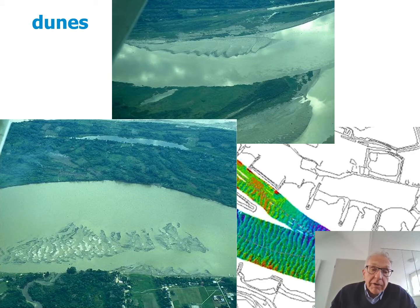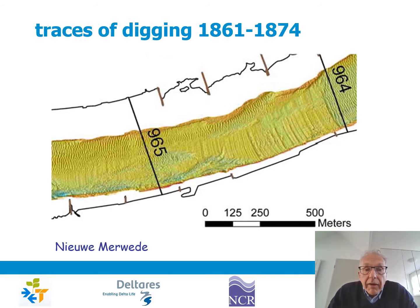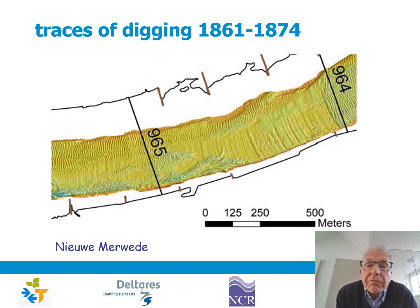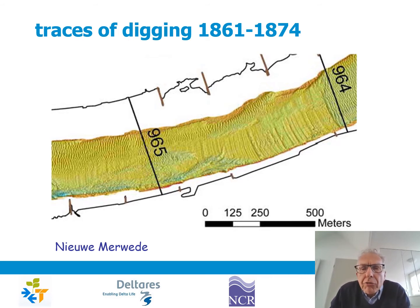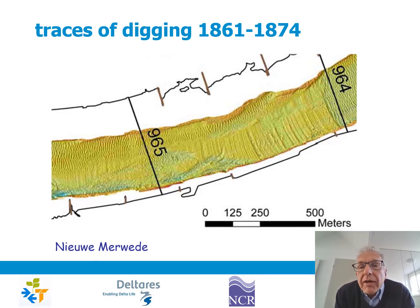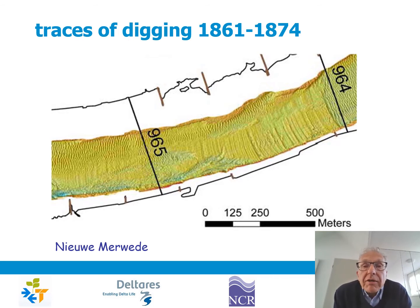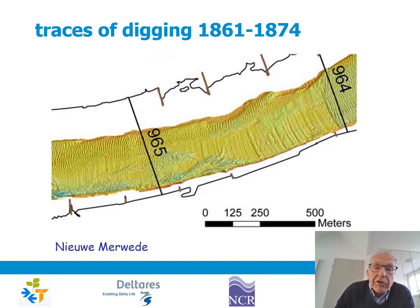Dunes are even smaller than bars. Dunes can also be seen on this multi-beam echo sounding result of the Nieuwe Merwede River in the Netherlands. Interestingly, you not only see those dunes, but also some peculiar features that are traces of digging, because the bed consists of very resistant clay. This river was excavated in the 19th century, and the traces are still visible in the hard clay on the riverbed.